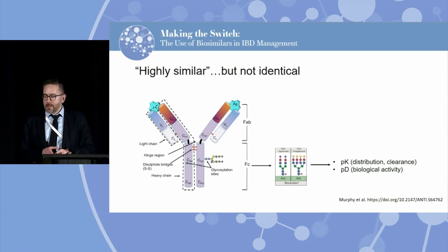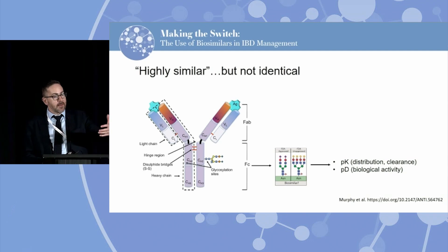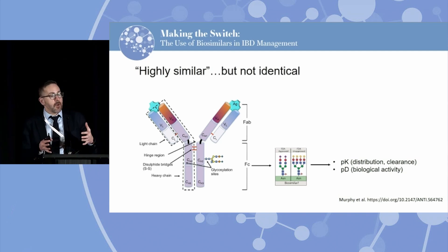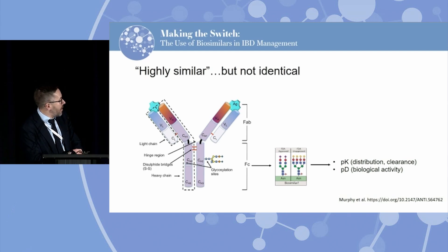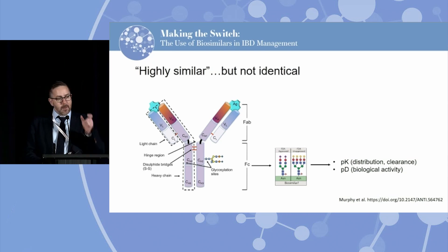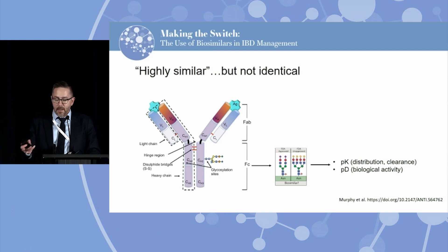People often ask: if biosimilars are highly similar but not identical, where are those differences? There are small structural changes that occur during manufacturing by these cell lines. The most common ones discussed are glycosylation chains — short or long chains of sugars off the antibody — which can be highly variable between biosimilar and originator infliximab, and even between batches. Looking at the Fc portion, you've got these sugar chains that can differ between products, and in theory these sugar chains may impact PK or PD. The FDA wants to know exactly how these sugar chains influence these factors.